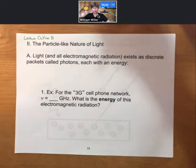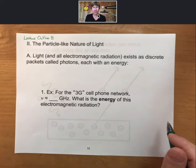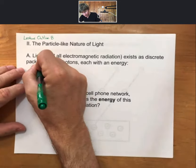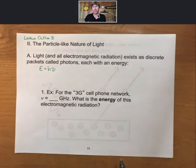We're talking about light right now and the particle-like nature of light. Now, light and all electromagnetic radiation exists as discrete packets called photons, each with energy. The equation is E equals H, which is Planck's constant, times frequency.